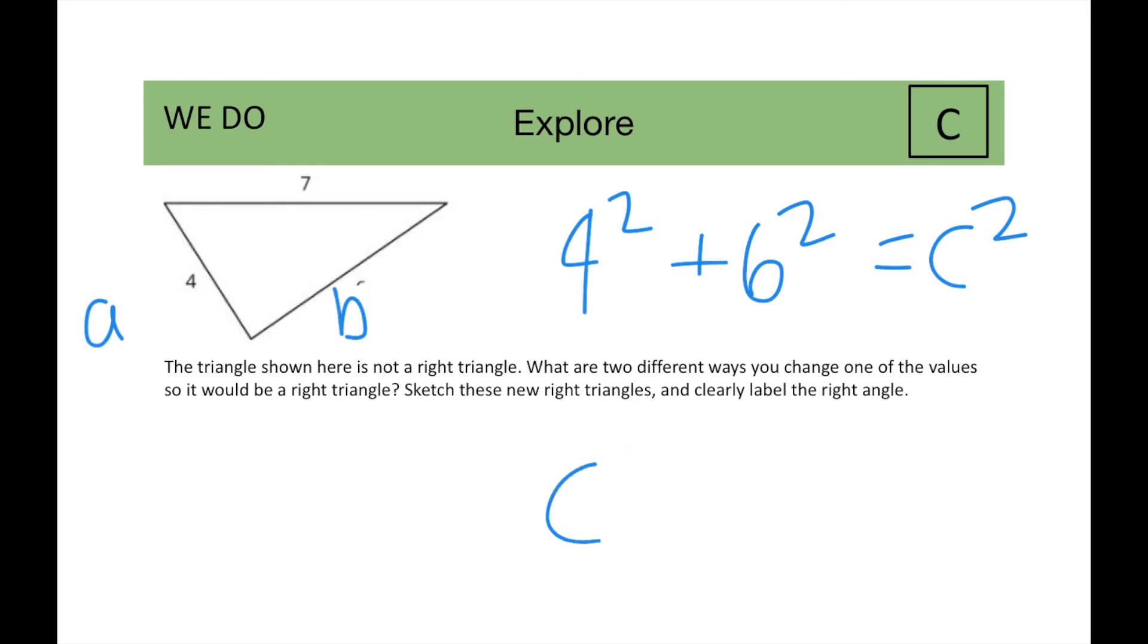You get C squared is equal to fifty-two, and the square root of C is equal to the square root of fifty-two.